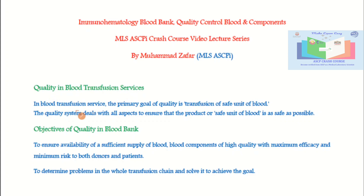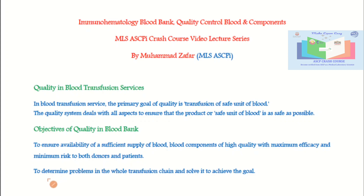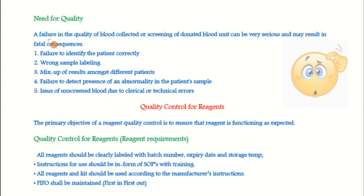Quality in blood transfusion service: the primary goal of quality is transfusion of a safe unit of blood. The quality system deals with all aspects to ensure that the product — a safe unit of blood — is as safe as possible. Objectives of quality in blood bank include ensuring the availability of a sufficient supply of blood and blood components of high quality with maximum efficacy and minimum risk to both donors and patients, and to determine problems in the whole transfusion chain and solve them to achieve these goals.